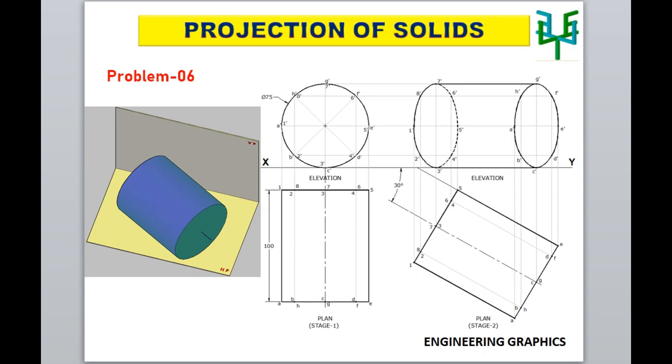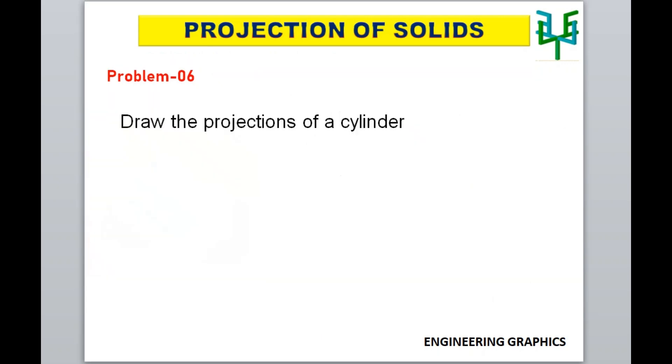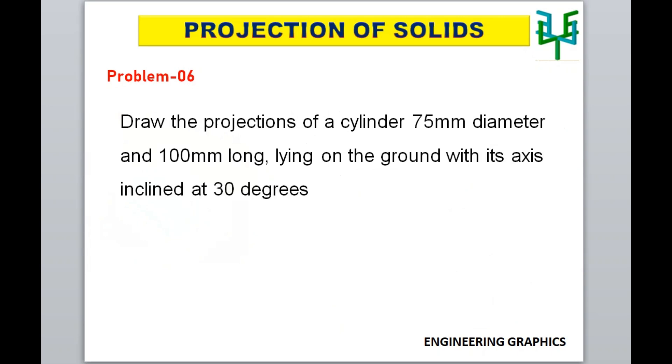In this video, we are going to discuss projections of a cylinder with the condition axis inclined to VP and parallel to HP. Let us see a problem. Draw the projections of a cylinder, 70mm diameter and 100mm long, lying on the ground with its axis inclined at 30 degrees to the vertical plane.